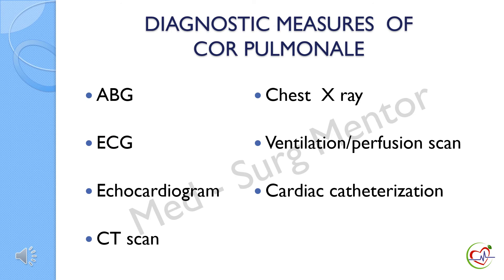Other common diagnostic measures of cor pulmonale are arterial blood gas analysis, electrocardiogram, echocardiogram, CT scan, chest X-ray, ventilation perfusion scan, and cardiac catheterization.